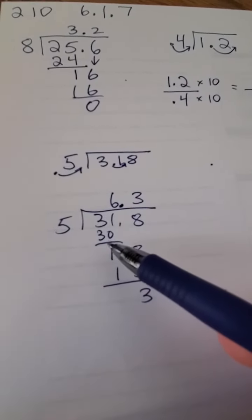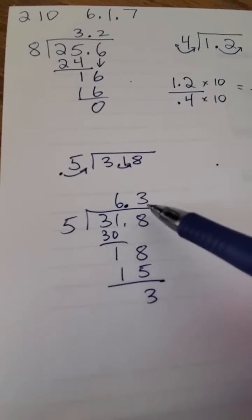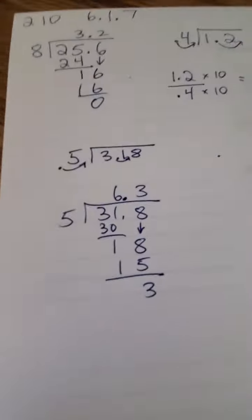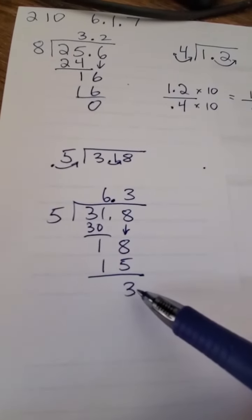5 goes into 30 six times. 5 goes into 31 six times, which is 30. Subtract to get a remainder of 1. Bring down the 8, like I would always do. 5 goes into 18 three times. That's 15, a remainder of 3.